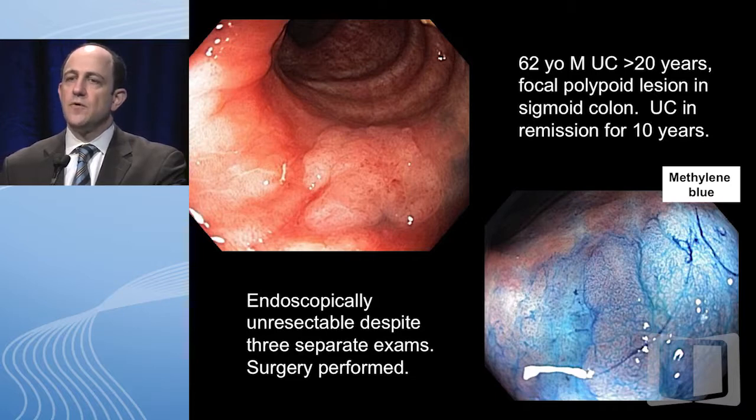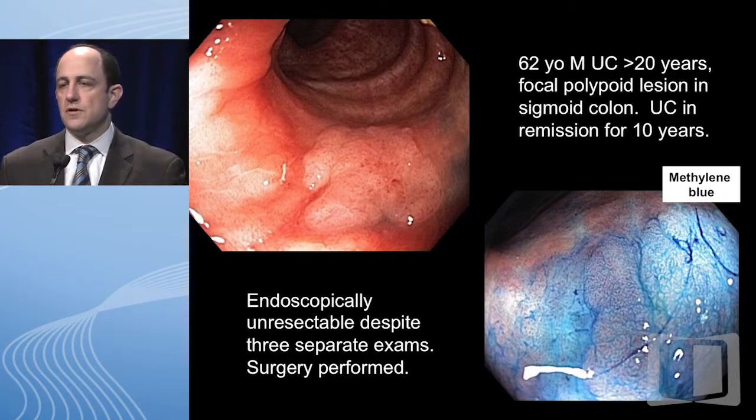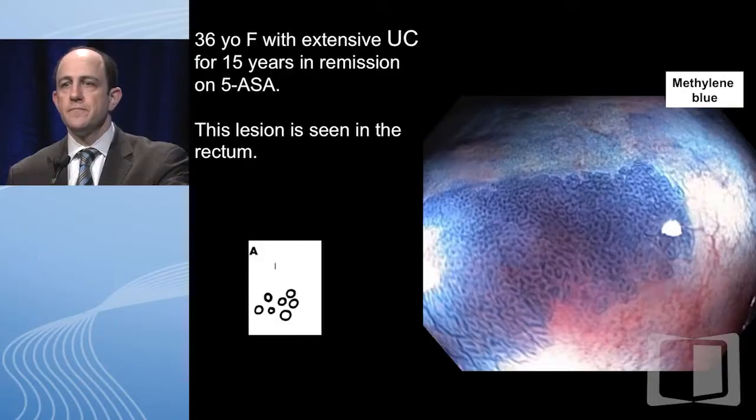A 62 year old man with ulcerative colitis for more than 20 years had this focal polypoid lesion visible on white light, but when we use methylene blue you can now see how the margins come out. Very importantly there were some satellite lesions I didn't quite appreciate as well in the white light image. There's clearly a role for chromo when you find a lesion and want to remove it. Looking at the pit pattern — those curvilinear appearances of the crypts compared to the oval or circular pattern nearby — this was low-grade dysplasia. It was endoscopically unresectable and we sent the patient to surgery.